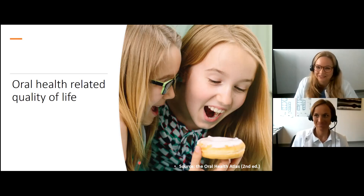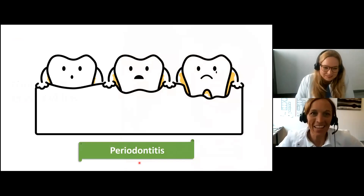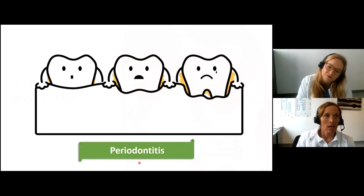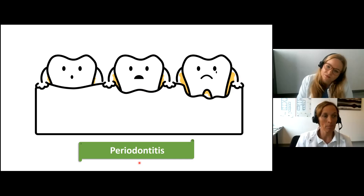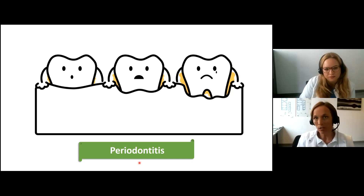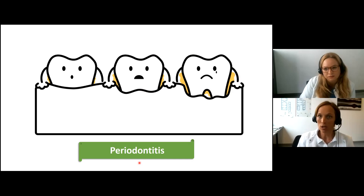Now let's talk about periodontitis. Periodontitis in general is a highly prevalent disease: approximately 70% of the adult population are affected by at least mild periodontitis, and about 11% are affected by severe periodontitis. Periodontitis is characterized by an inflammatory destruction of the tooth-supporting tissues.